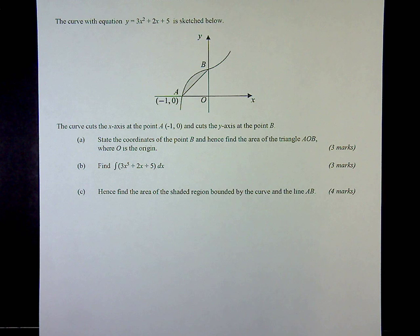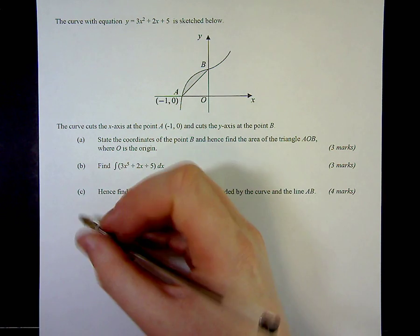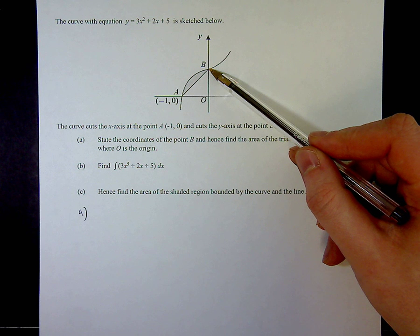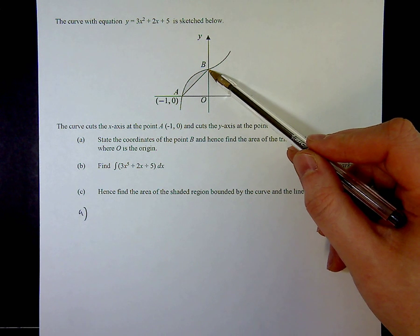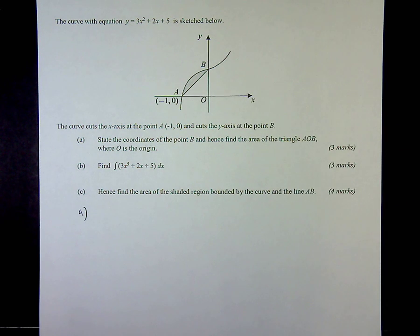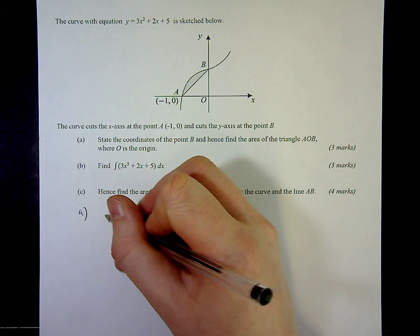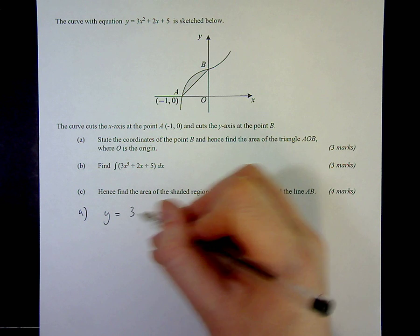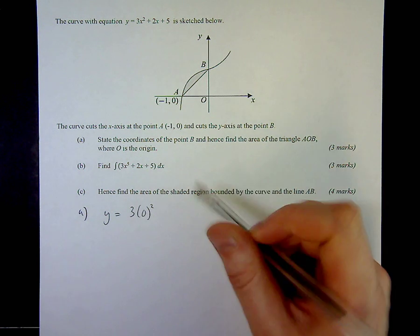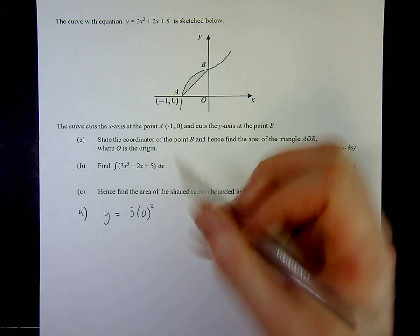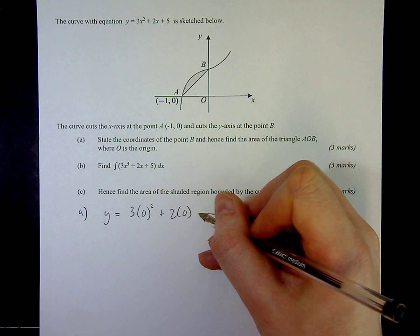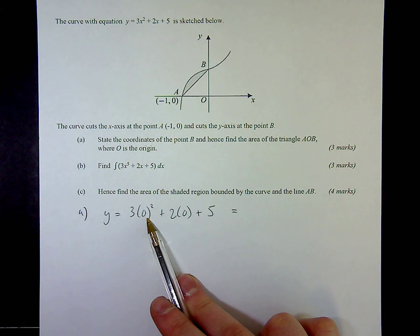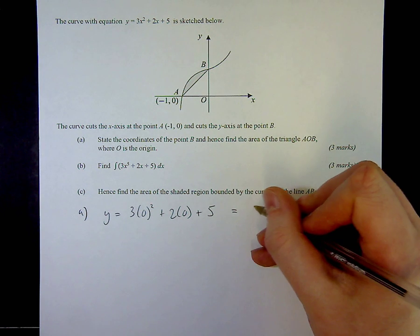So for part A, the first thing I need to do is find the y-intercept. Where it cuts the y-axis, the x-coordinate will be 0. So what I need to do is sub in 0 to my equation where x is. So it's going to be y equals 3 lots of 0 squared, plus 2 lots of 0, plus 5. Pretty straightforward - 3 times 0 squared is 0, plus 2 times 0 is still 0, plus 5 is 5.